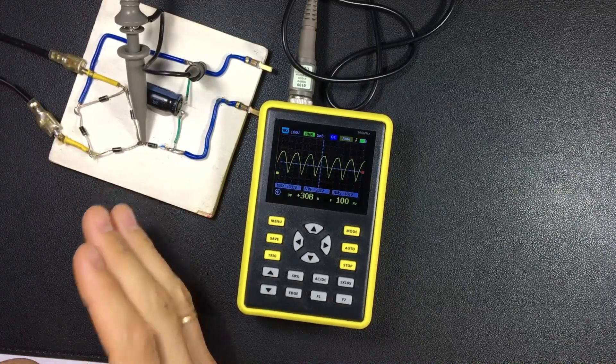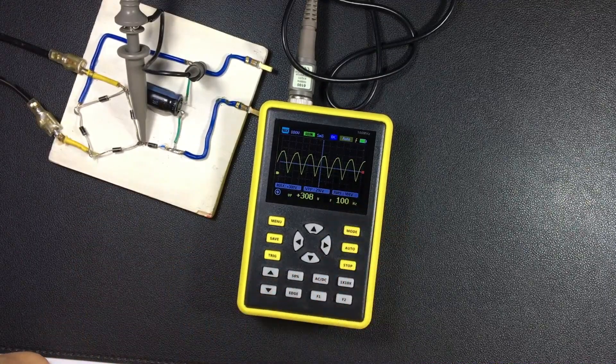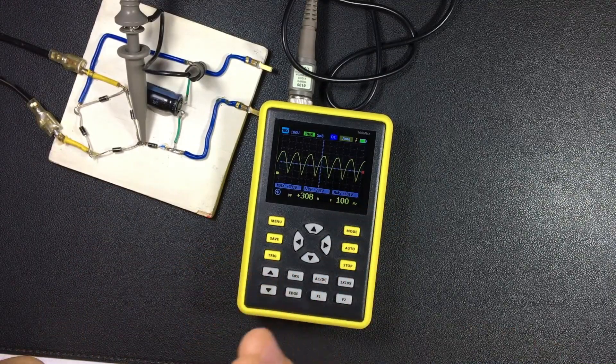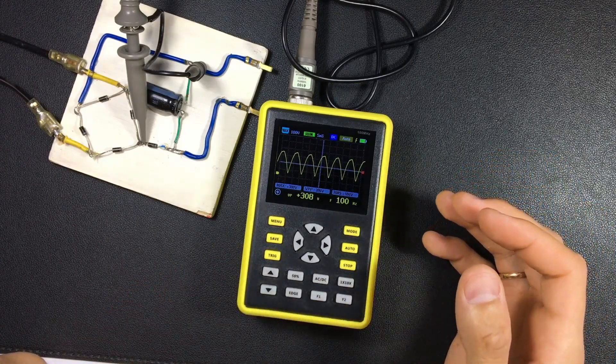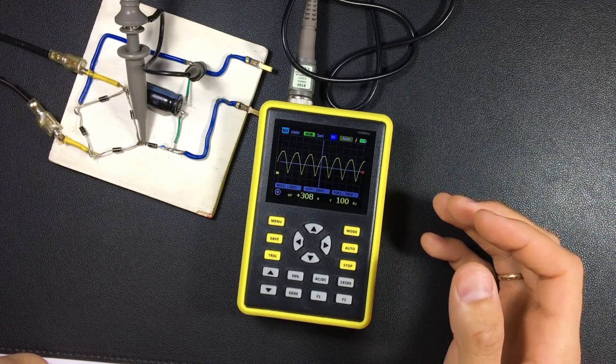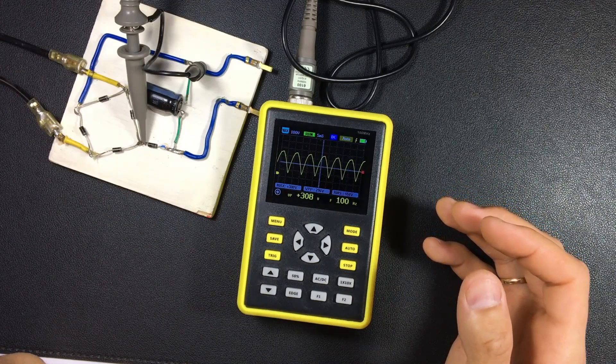And that is the function of the fifth diode, it is to leave us an area to measure. For two functions, I am going to give you a brief preview: on the one hand to make a fan work, and on the other hand to correct the PFC, the power factor.